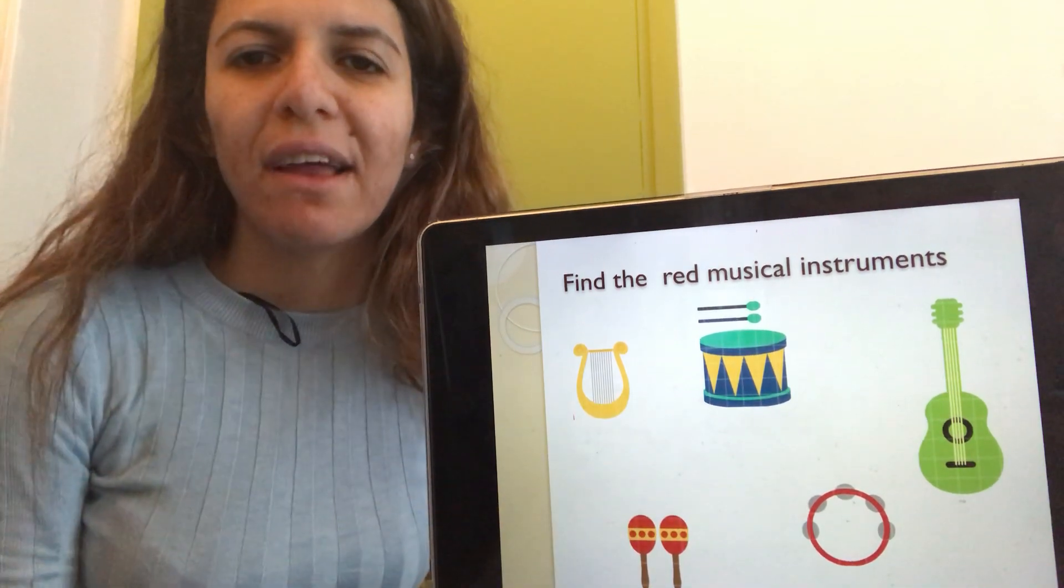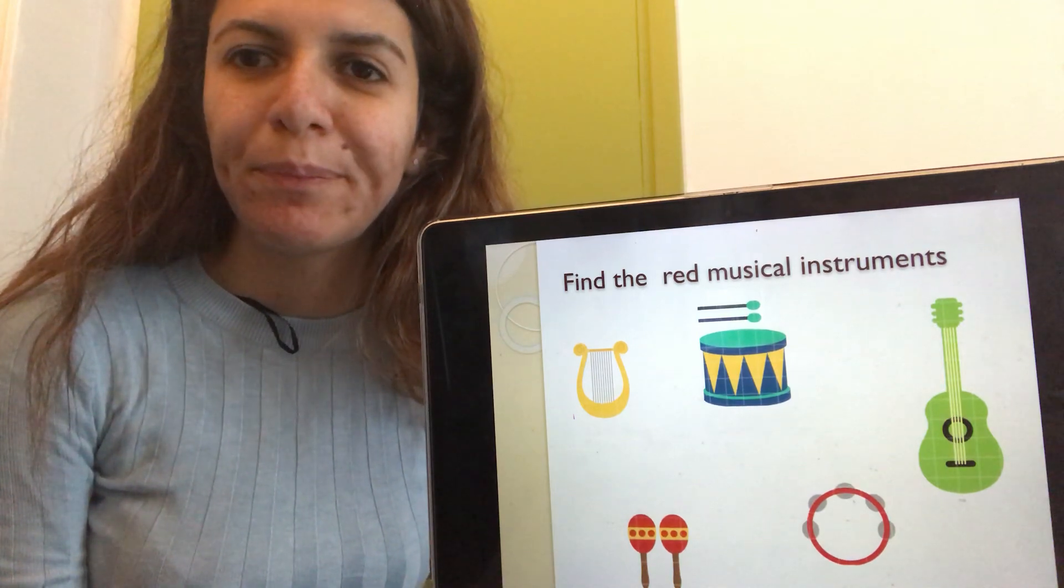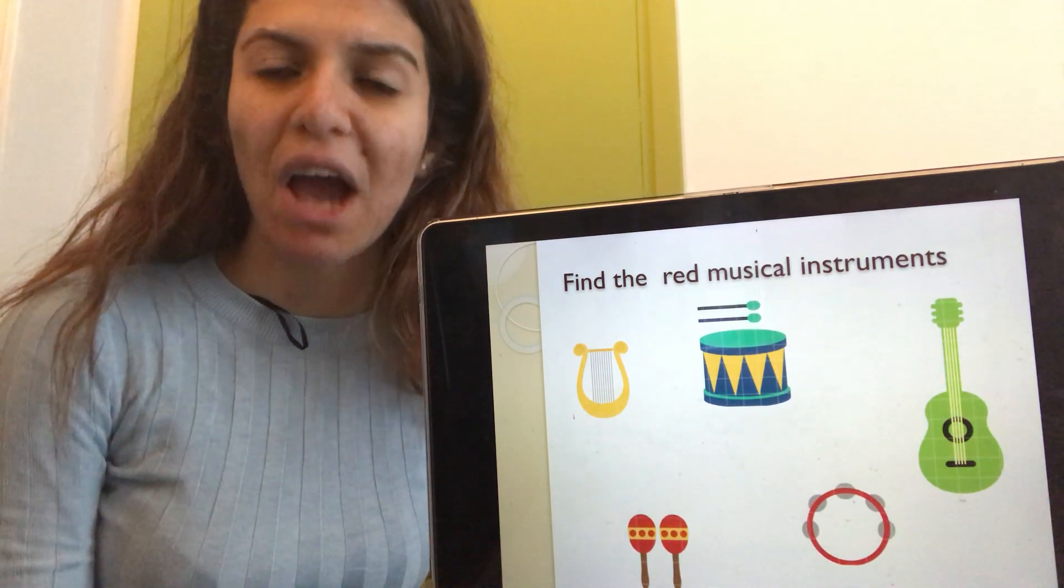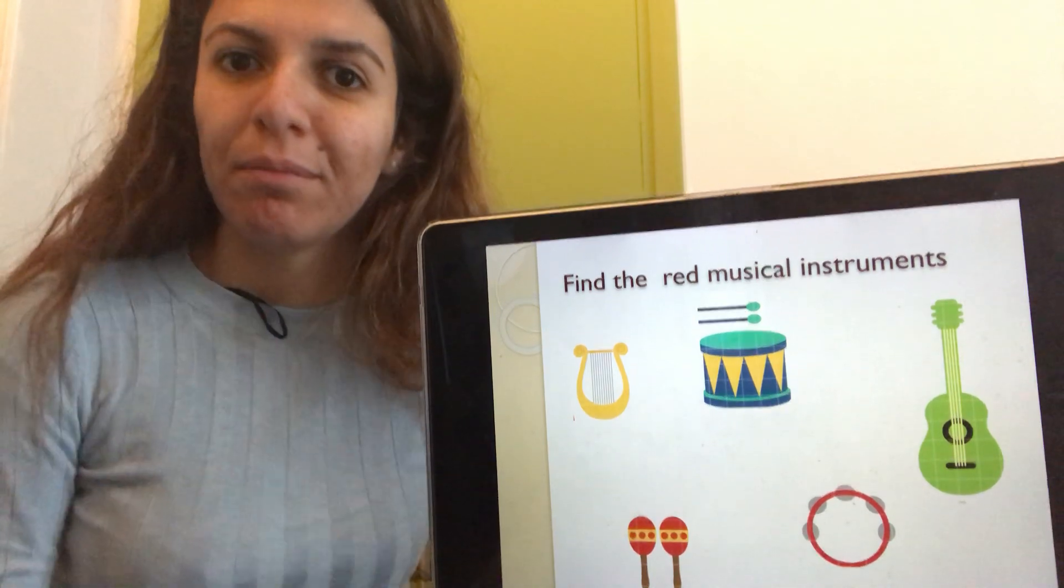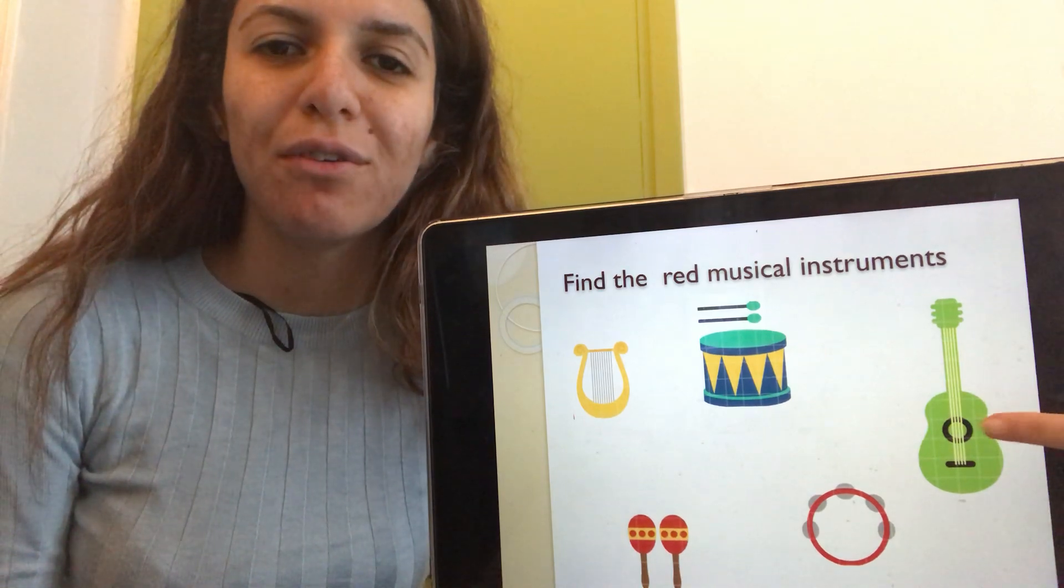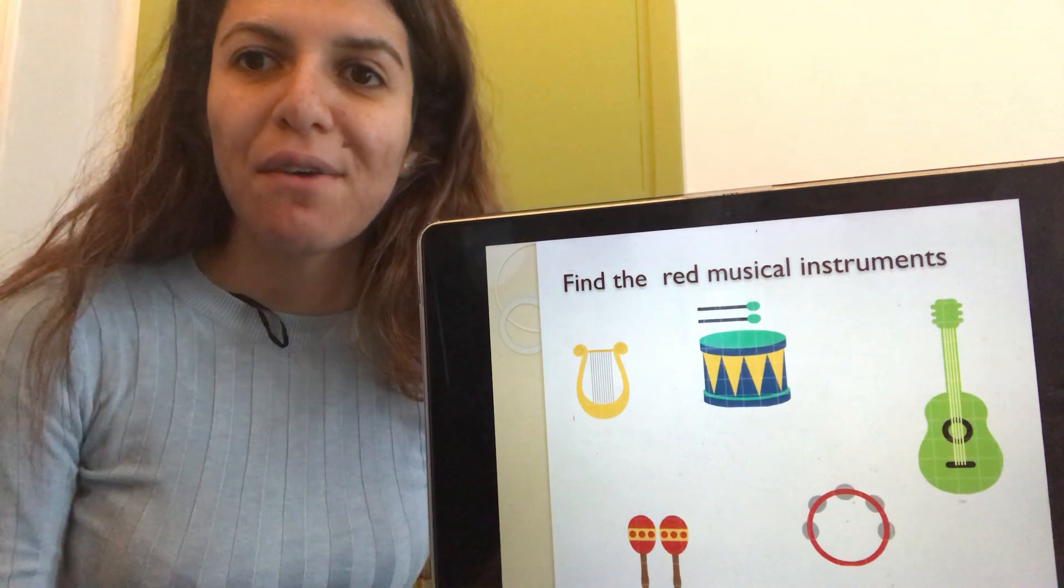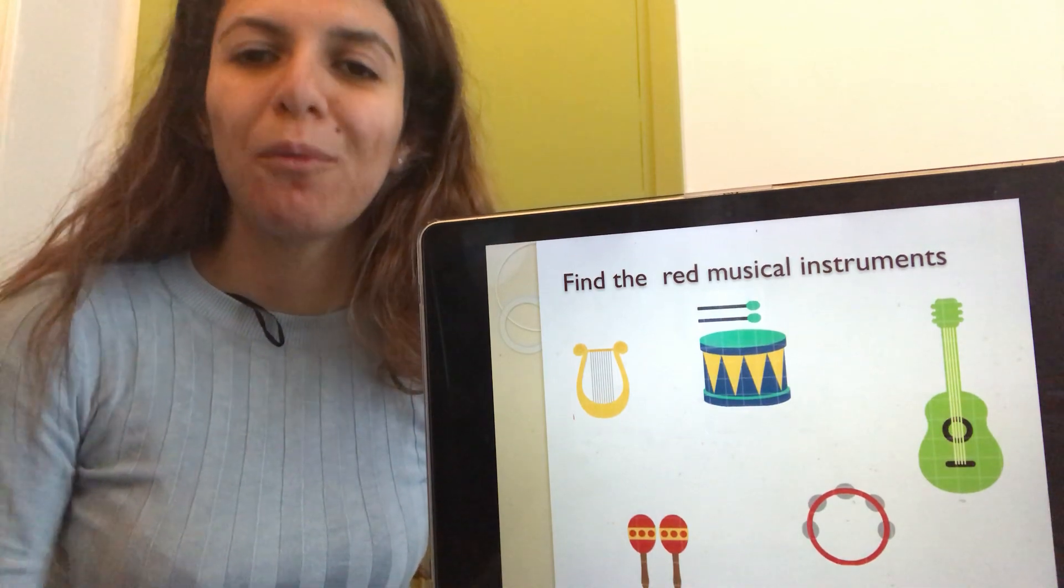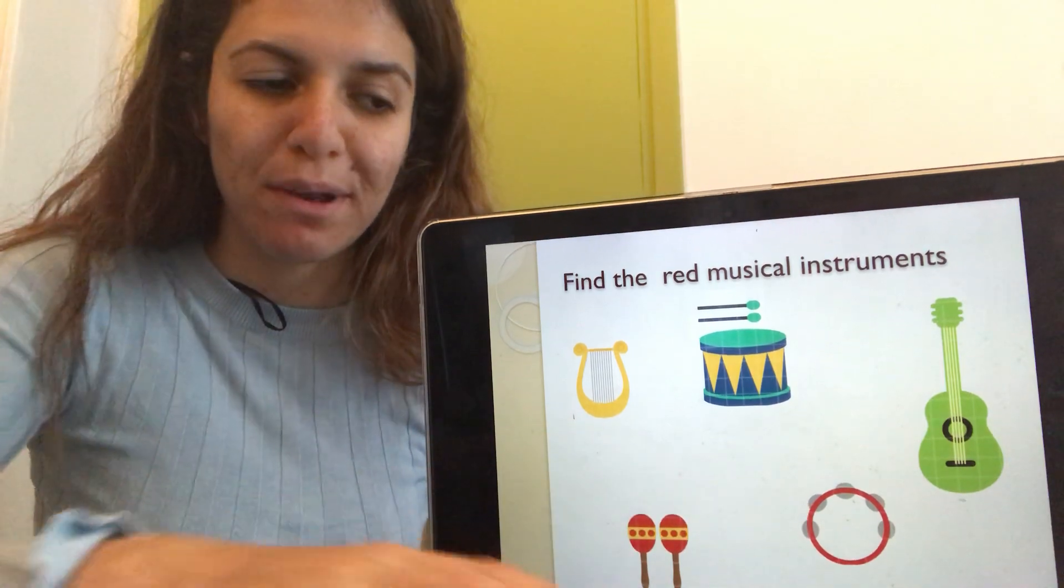You need to help me find the red musical instruments. Is Jack the guitar a red instrument? No. He is green. Did you find the red ones? Well done. One, two. Two red instruments.